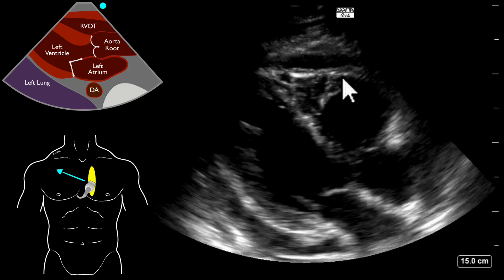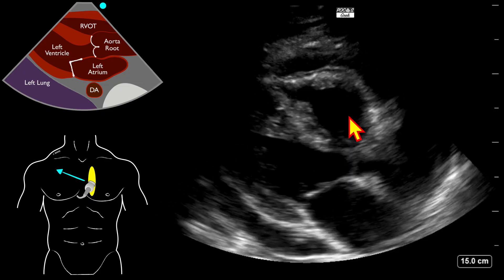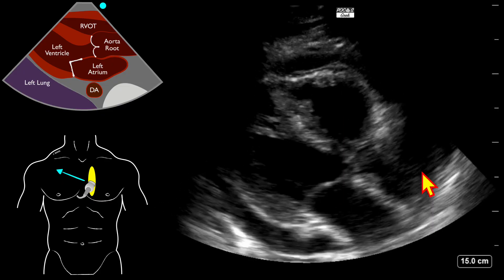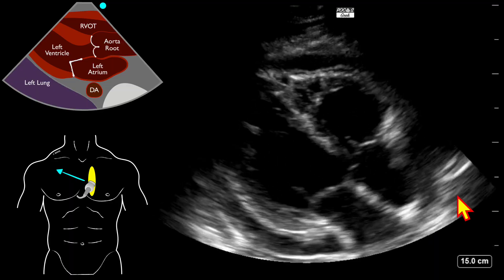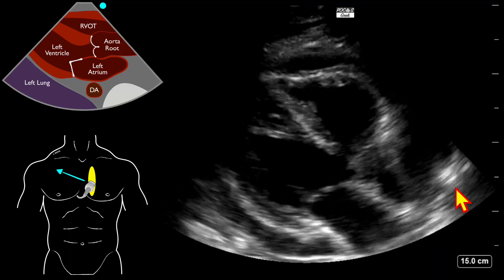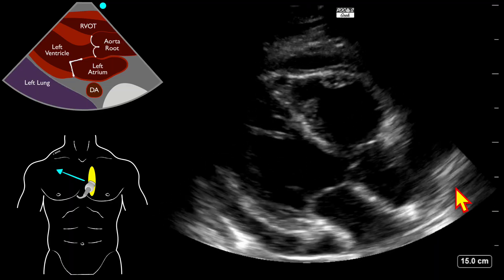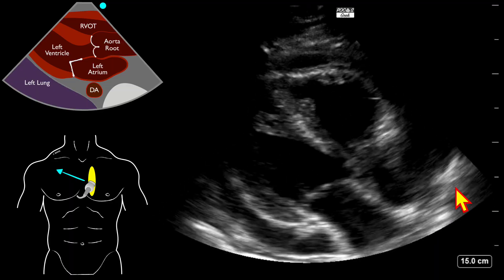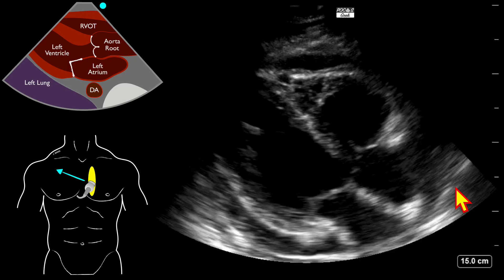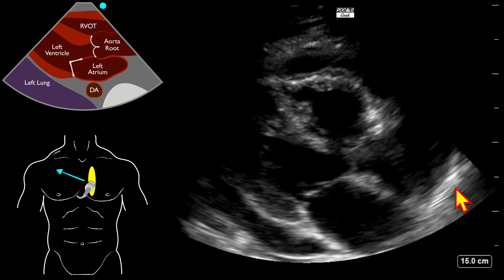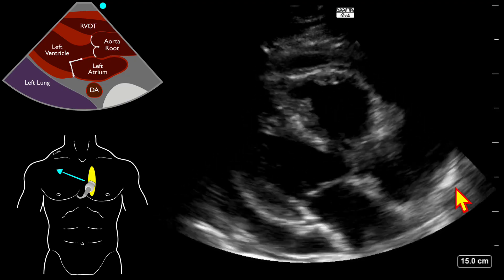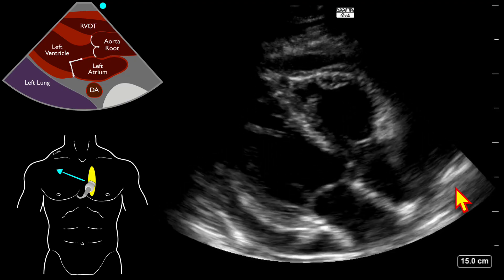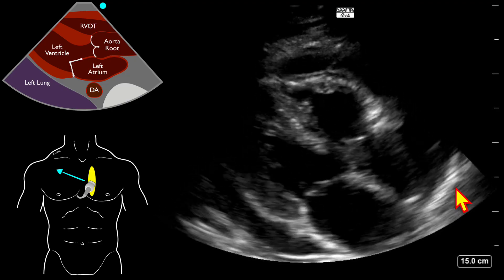The right ventricle is hard to determine EF on this view, given that we don't usually see it well in the parasternal long axis, which is what this is supposed to be. But we do see some of it up there, and it seems to have decent function.